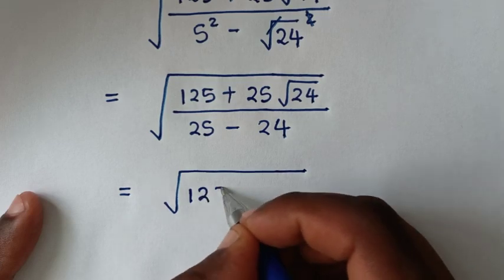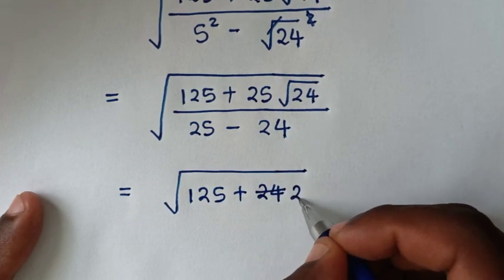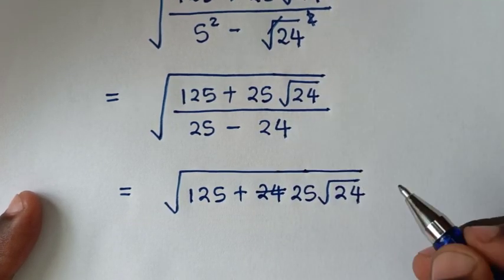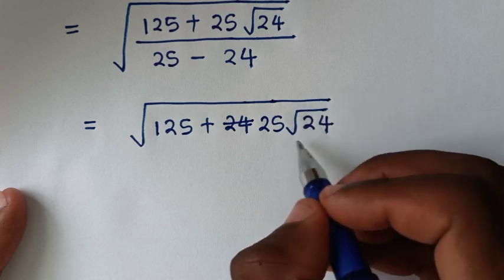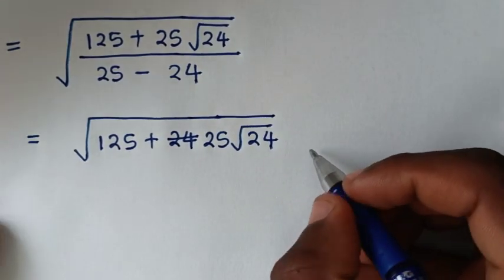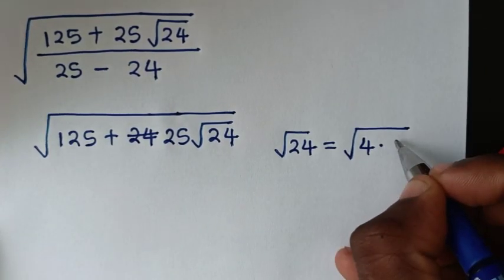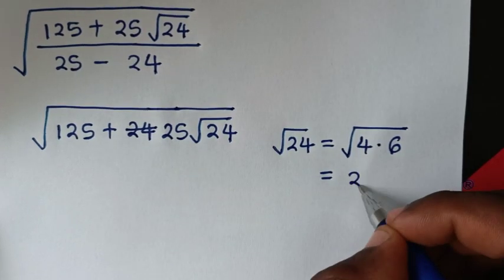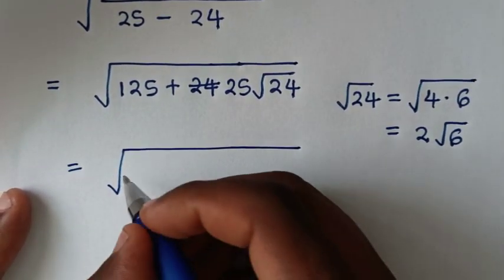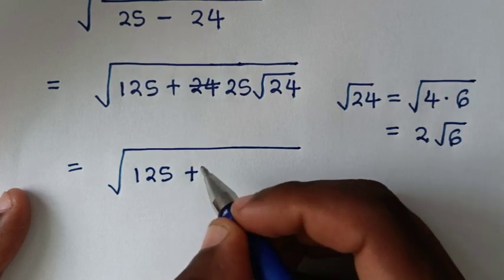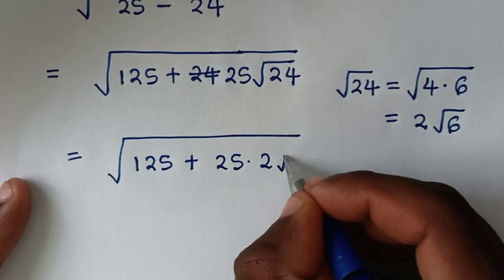Since the denominator is 1, we just have the numerator: square root of 125 plus 25 square root of 24. Now we simplify square root of 24. Since 24 equals 4 times 6, square root of 24 equals square root of 4 times square root of 6, which is 2 square root of 6. So the expression becomes square root of 125 plus 25 times 2 times square root of 6.